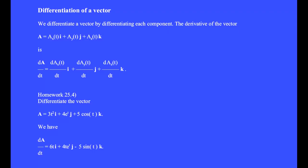We differentiate a vector by differentiating each component independently. The x, y, and z components of vector a are each functions of time.